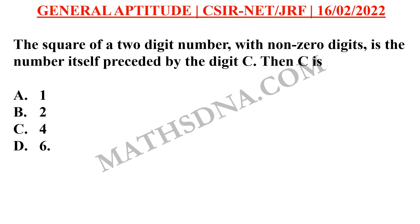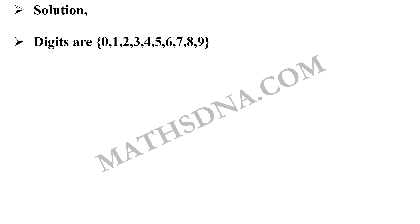Let us first understand this question and then solve it. In the question they are saying that you have a 2-digit number, and when you square it, you get the same number again but with a preceded digit that is C. So firstly we take the digits — all the digits are 0, 1, 2 up to 9 — and we square them.